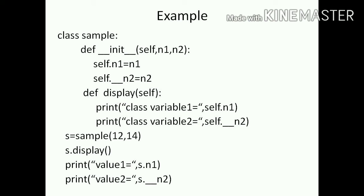In this example, n2 is private because it is prefixed with a double underscore. n1 can be accessed both within the class and outside the class. But n2 can only be accessed within the class; it cannot be accessed outside the class.